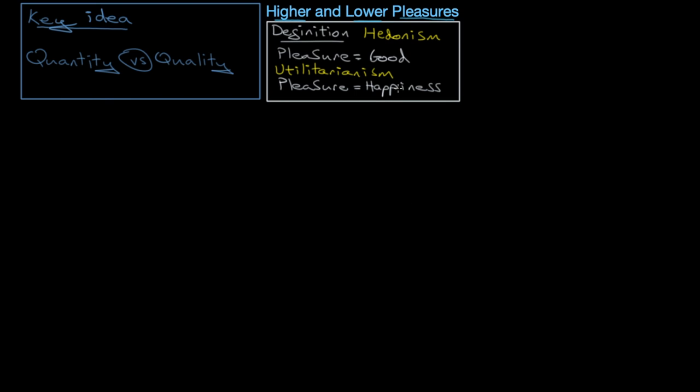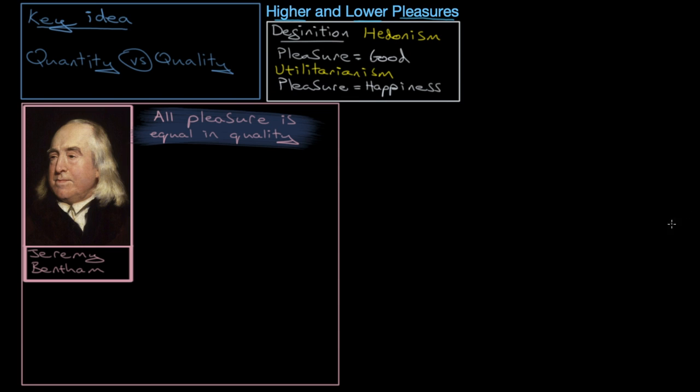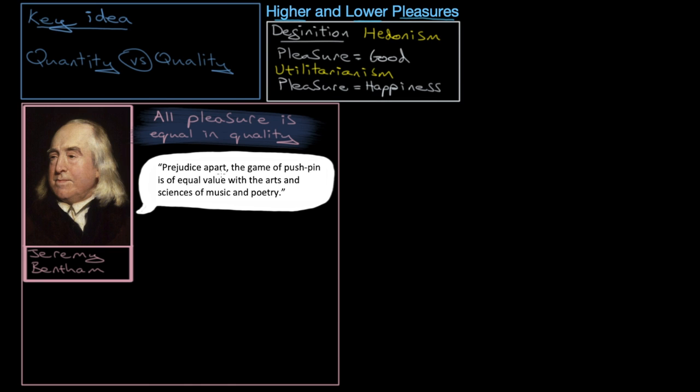So I want to start with a brief description before we get to the concept of higher and lower pleasures of the idea of quantity alone being the important thing. The person who really supported this was Jeremy Bentham. Now, Bentham thought that all pleasure, no matter what it was, is the same amount, is the same kind of thing. It's just a reaction. But you get different amounts from different things, but it's all about quantity. They are all equal in quality. As he says, prejudice apart. So this means, apart from pre-judging things, the game of pushpin is equal, is of equal value to the arts, sciences, music, and poetry.